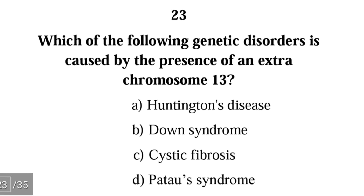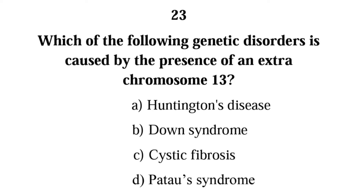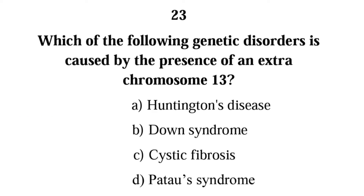Number twenty-three: which of the following genetic disorders is caused by the presence of an extra chromosome 13 — Huntington's disease, Down syndrome, cystic fibrosis, or Patau's syndrome? The correct answer is D, Patau's syndrome, also called trisomy 13. This happens when an individual has three chromosome 13 instead of the normal two.